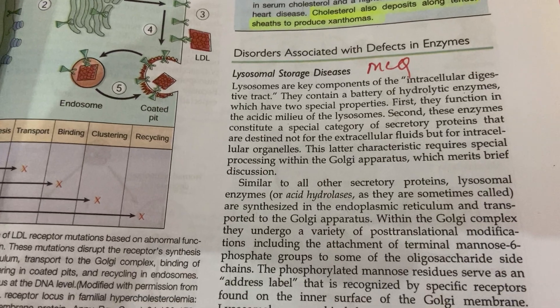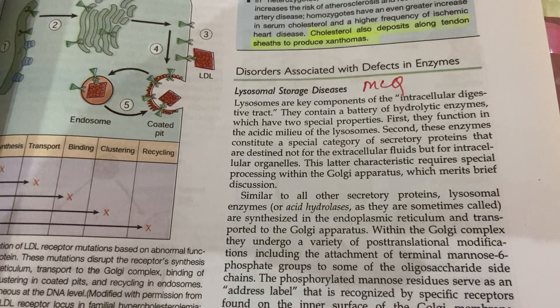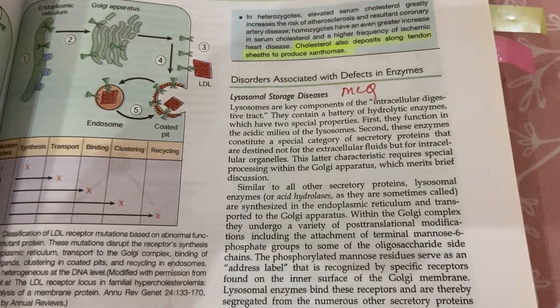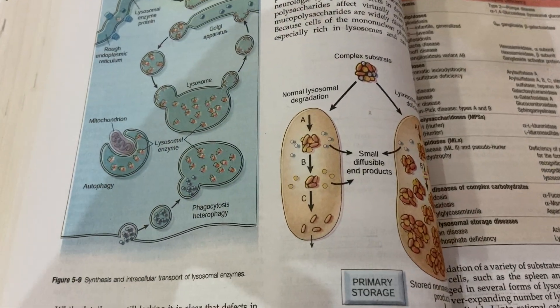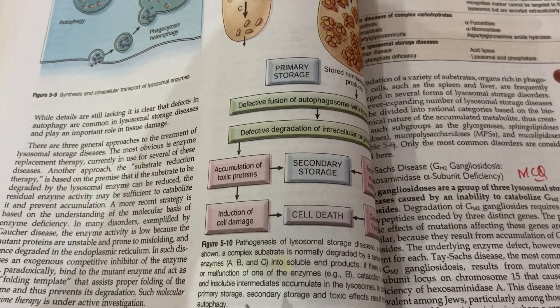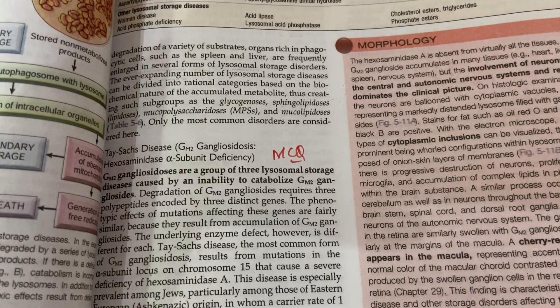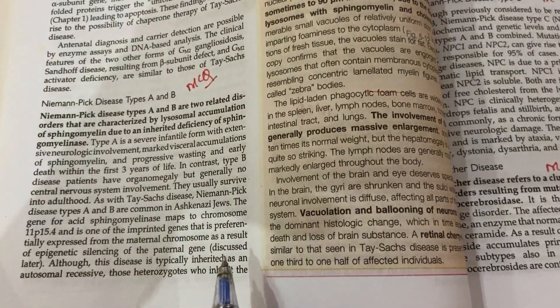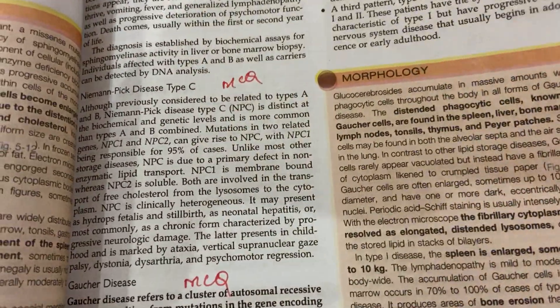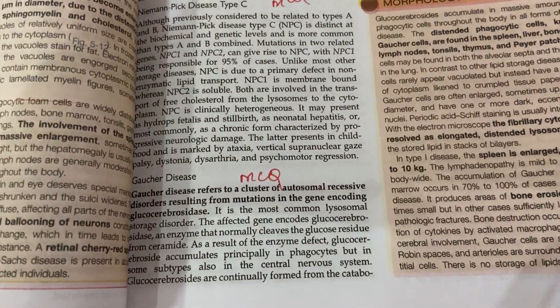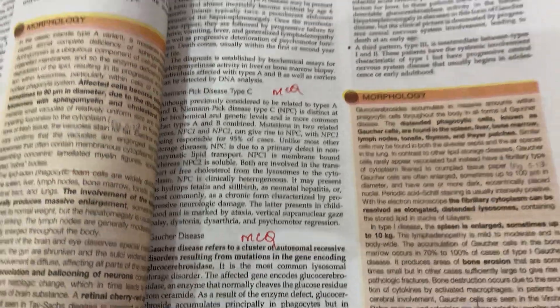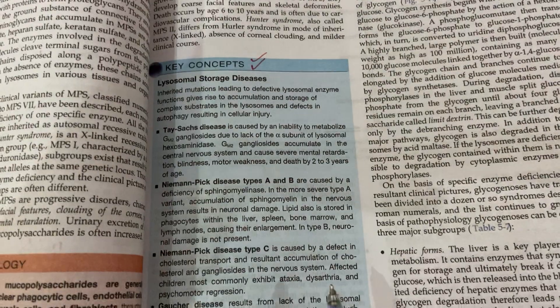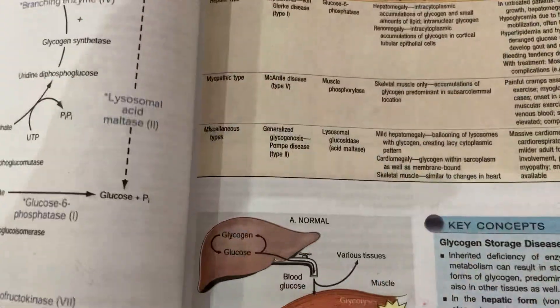Then we have disorders associated with defects in enzymes, including lysosomal storage diseases, which are important from the MCQ point of view. Go through figures 5.9 and 5.10. Tay-Sachs disease (gangliosidosis) is important for MCQs. Niemann-Pick disease type A and B, Niemann-Pick disease type C, and Gaucher's disease are all important from the MCQ point of view. Go through the key concepts of lysosomal storage diseases. You can skip glycogenosis.